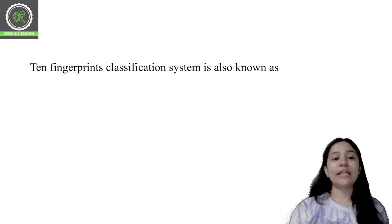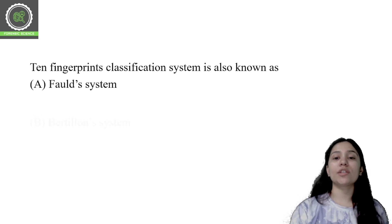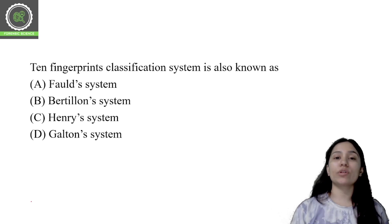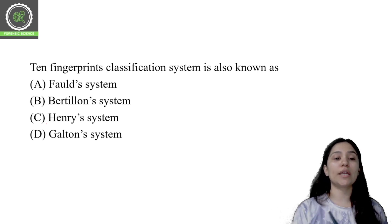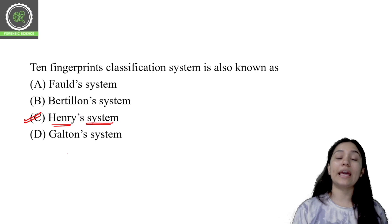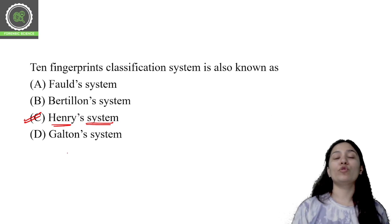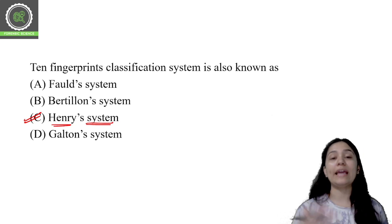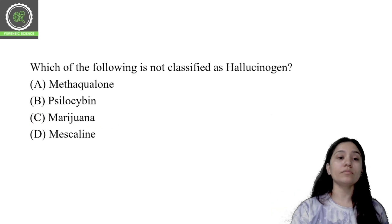Moving to the next question: the 10-digit fingerprint classification system is also known as which system — options are the Bertalon system, Henry system, or Galton system. The correct answer is again option C: the Henry system. It was named after its founder, Edward Richard Henry. Two other notable contributors were Azizul Haqq and Hem Chakraborti.